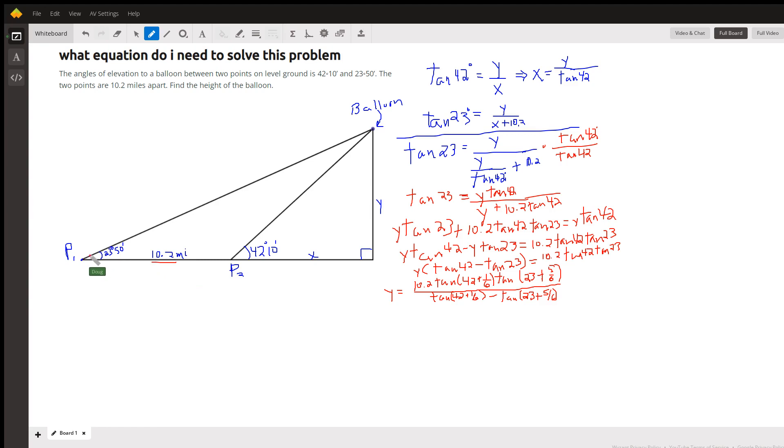The angle of elevation to this balloon in the sky from one point is 23 degrees 50 minutes, and from point two it's 42 degrees 10 minutes. And we want to find the height of the balloon, so this is what we want to find right here.